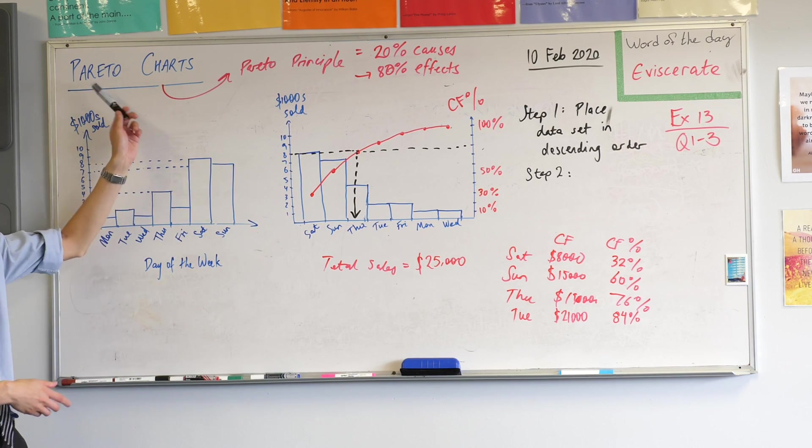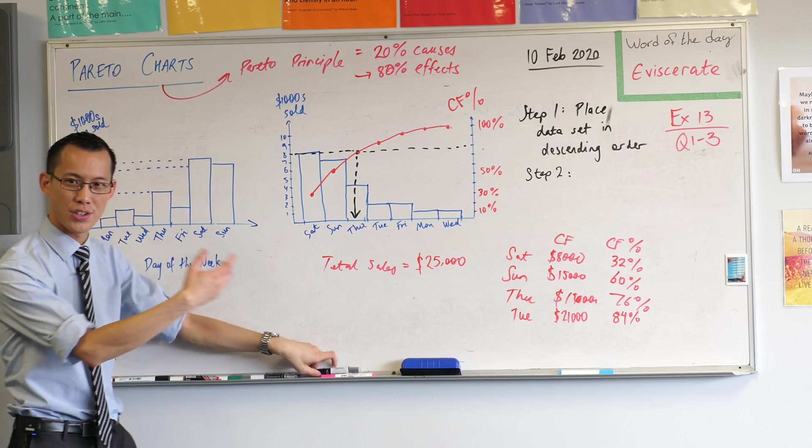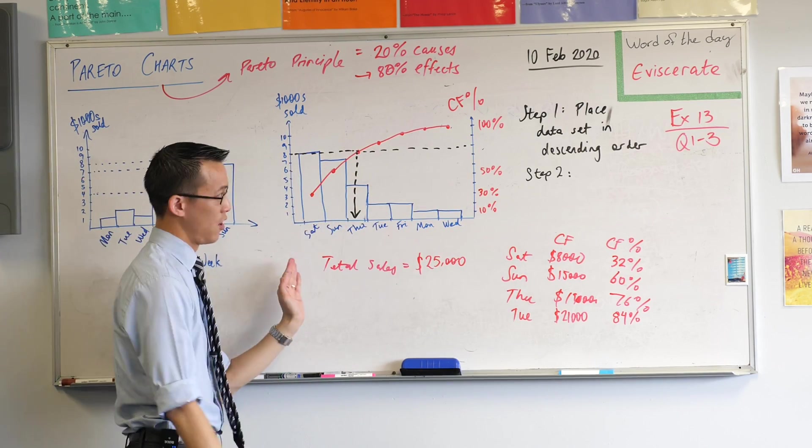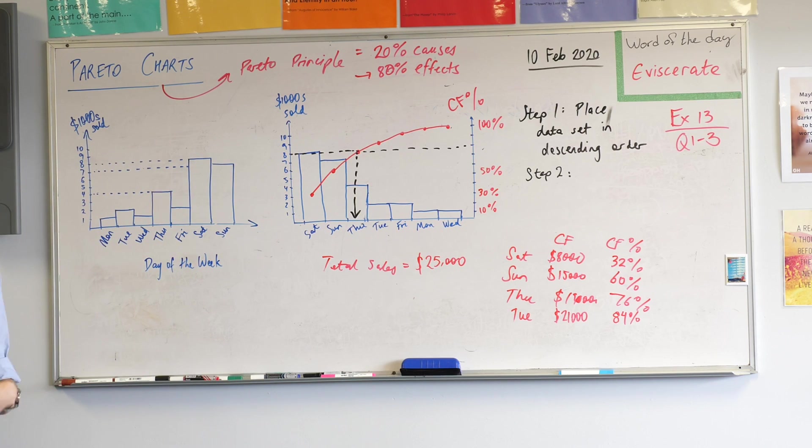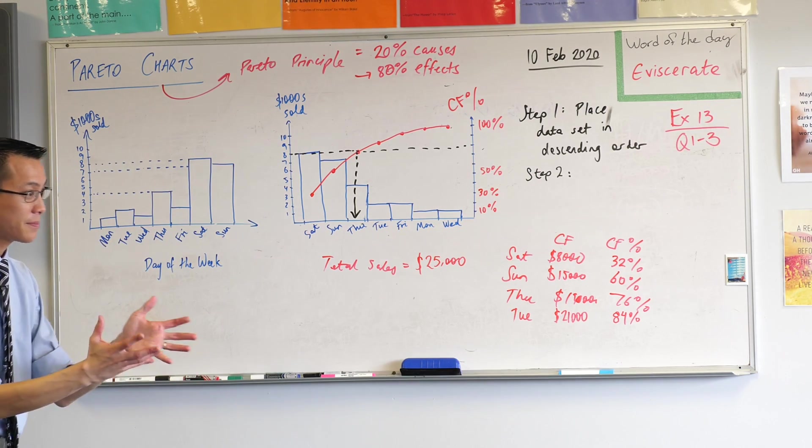So these Pareto charts, there's a bit more to unpack about them, but we want you to recognize what happens when you've got this bar chart on top of this cumulative frequency percentage. It's so useful, it gets its own name because it's quite frequently used. Questions? Any questions about this? Does it make sense? Yes. Well explained.